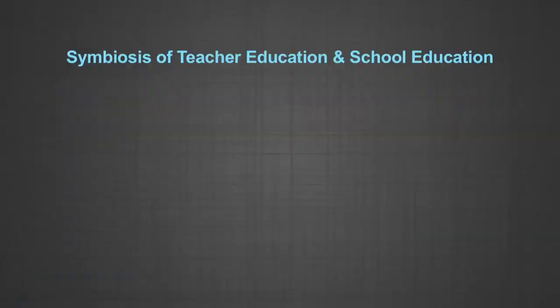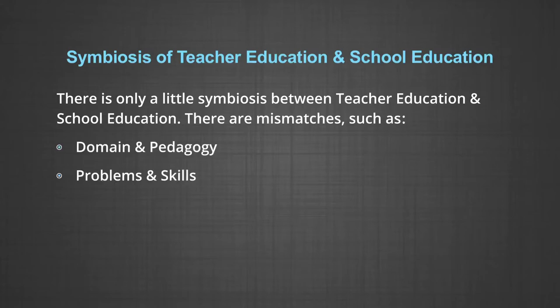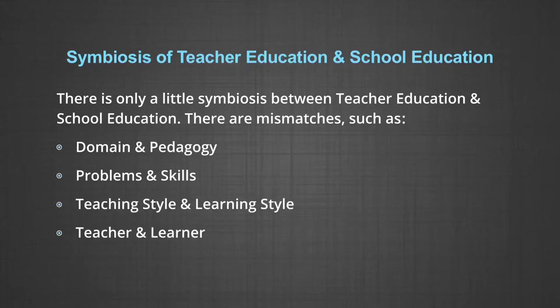The third heading is Symbiosis of Teacher Education and School Education. There is only a little symbiosis between teacher education and school education. There are mismatches such as domain and pedagogy, problems and skills, teaching style and learning style, teacher and learner, mason and construction.